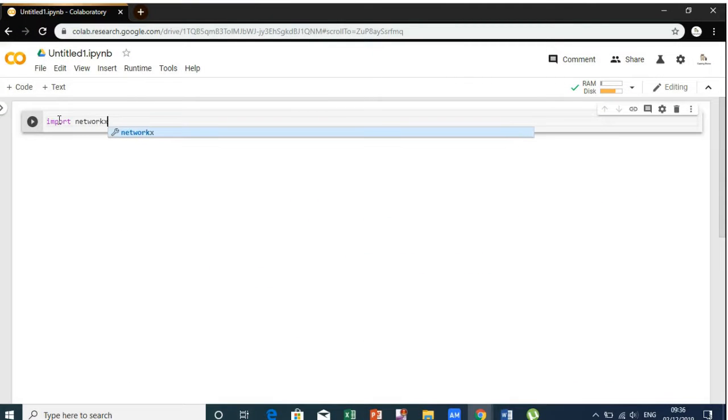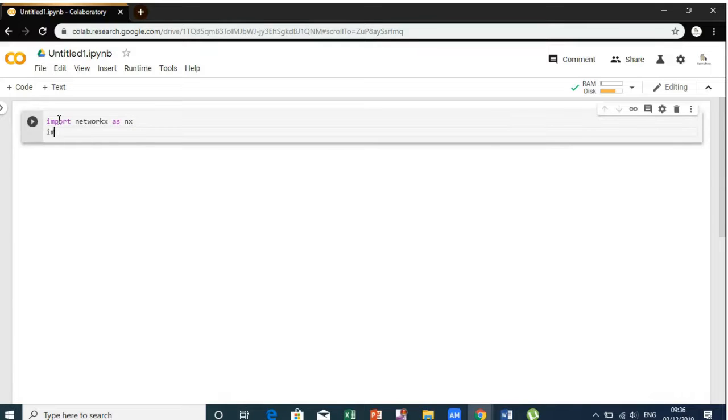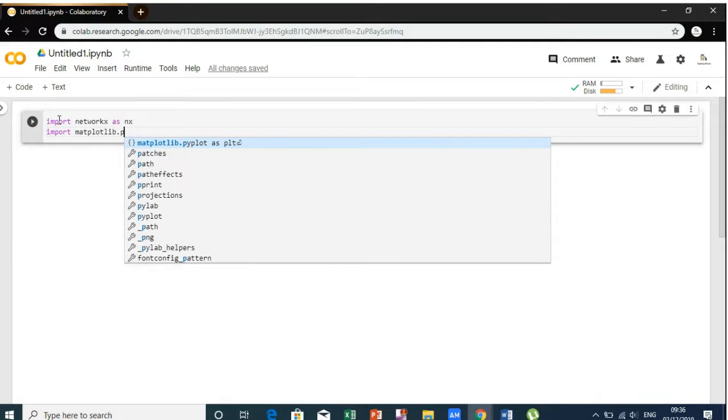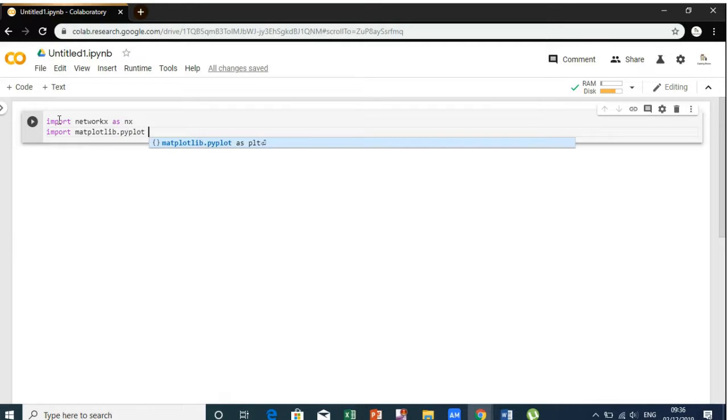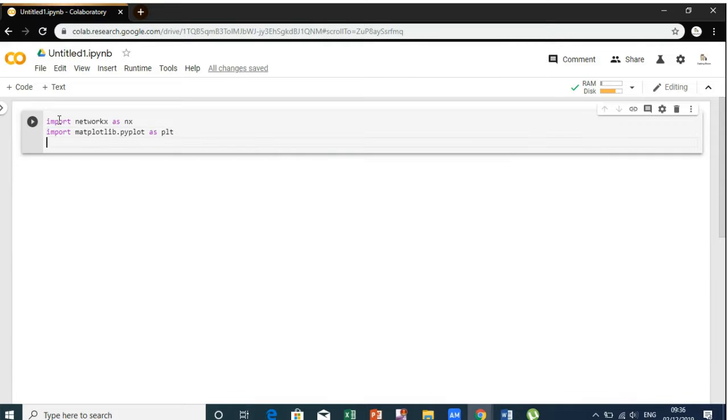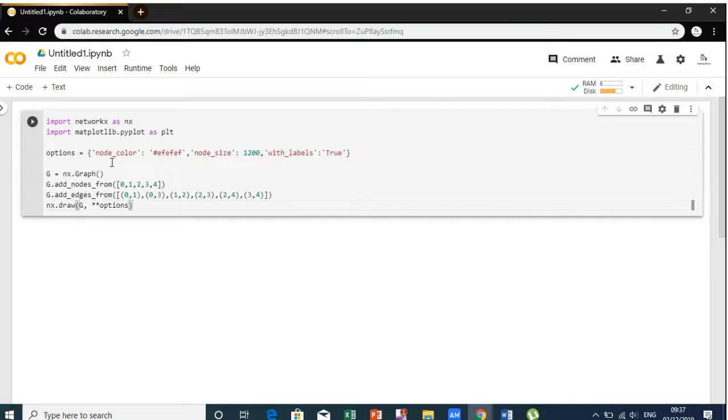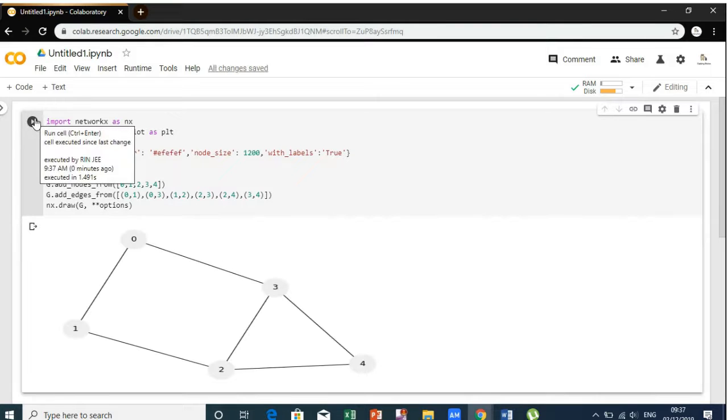Now, let's try it on Google Colab. Type in the code that was shown earlier. For the next code, we will copy paste the code that was shown earlier in the video. Click on play button and we will get the graph.